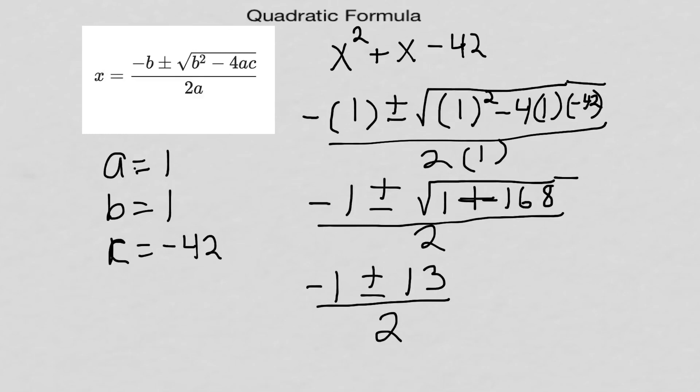Now I've got this down to where I've got to solve two problems. I've got to go negative 1 plus 13 divided by 2. The other way I have to do it is negative 1 minus 13 divided by 2.